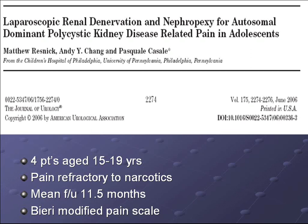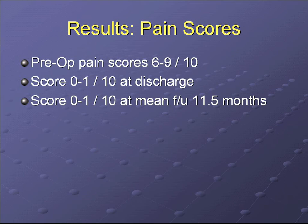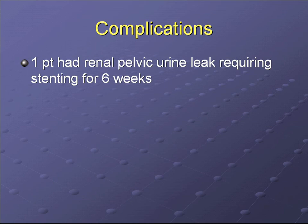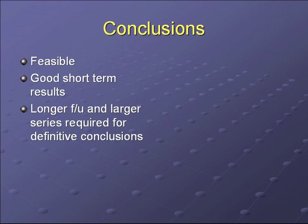An interesting study in the Journal of Urology looked at renal denervation and nephropexy in adolescents aged 15 to 19 with pain refractory to narcotics, with a mean follow-up of 12 months using analog pain scores. Preoperative pain scores ranged from 6 to 9 out of 10, and fairly durable pain relief was achieved at discharge and at 12 months. This procedure has also been performed in loin pain hematuria syndrome. One patient had a renal pelvic leak requiring stenting for six weeks. Their conclusion was that renal denervation is feasible with good short-term results, but a longer series with more follow-up is needed.